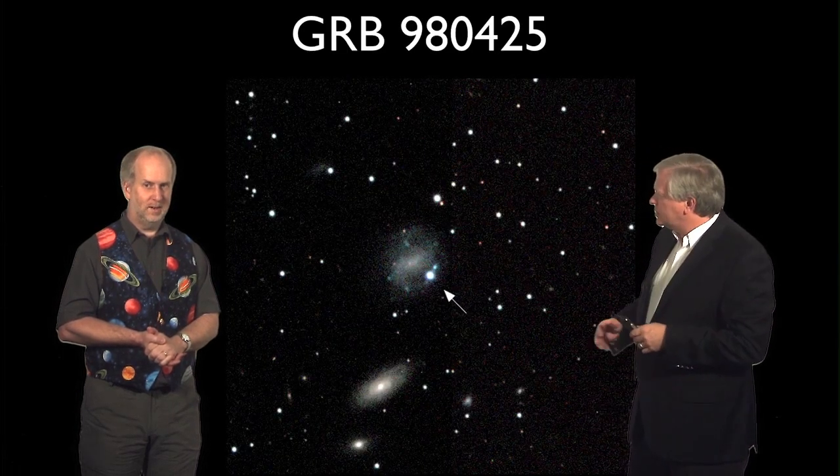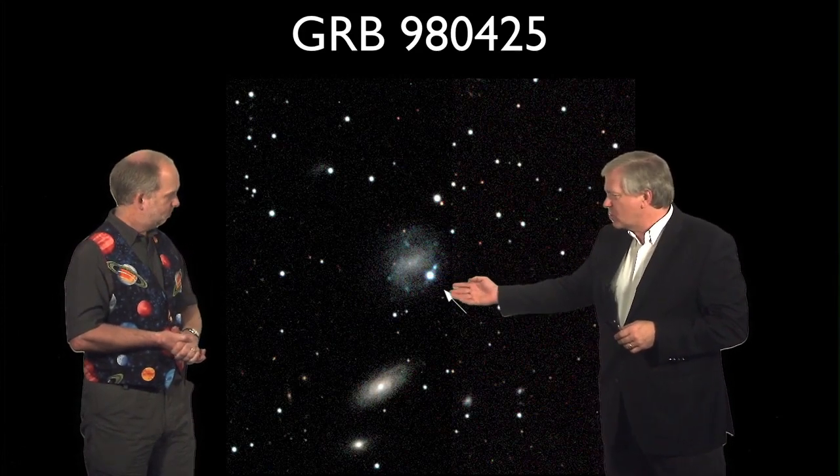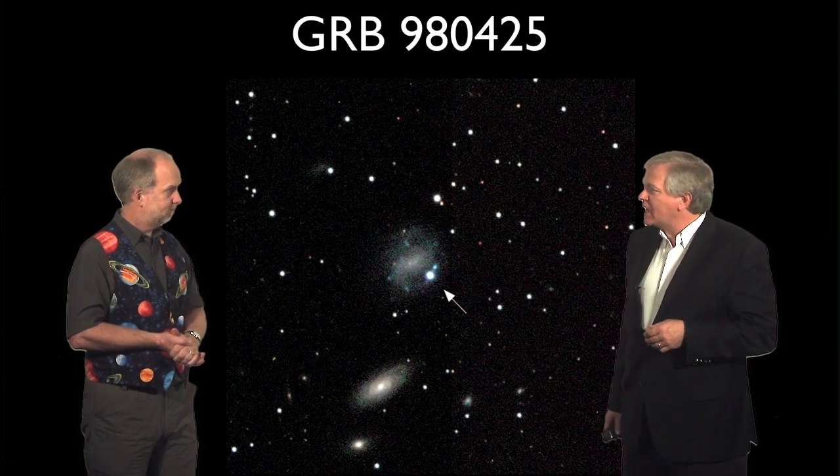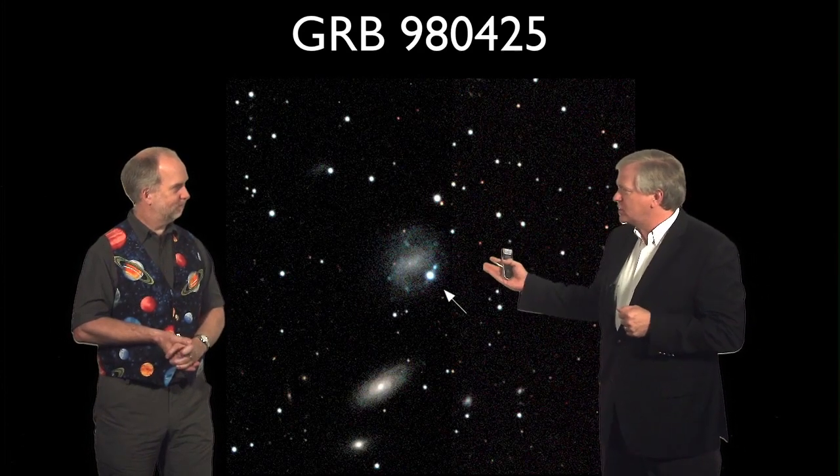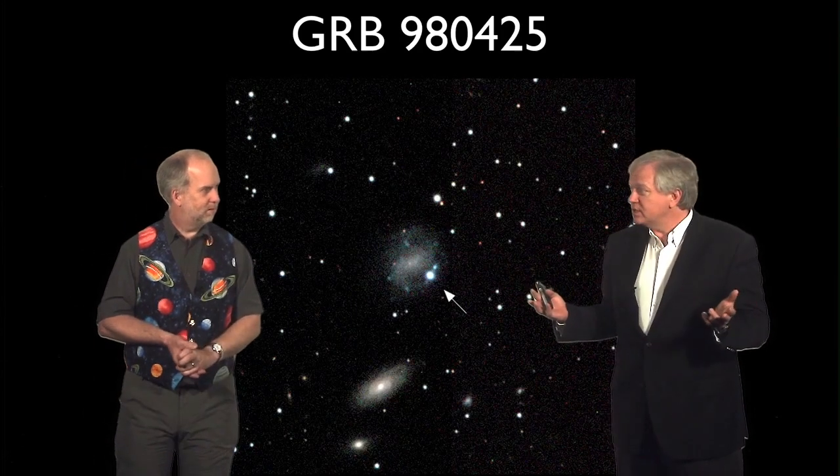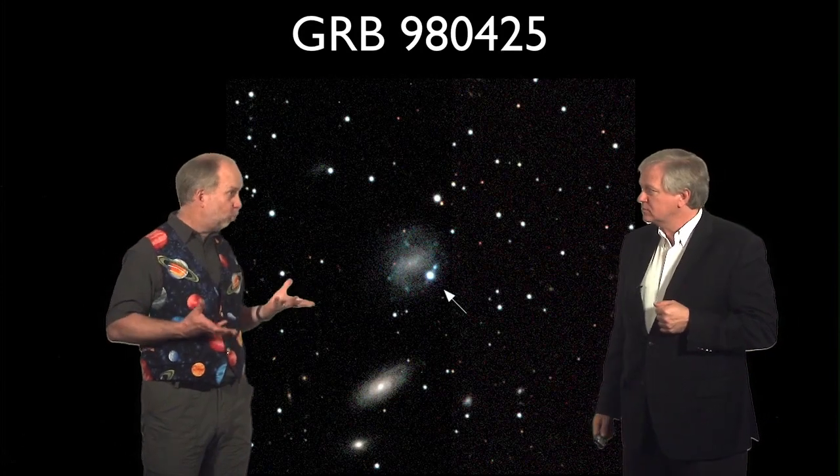I remember it was April 1998, and one of these Beppo-SAX gamma ray bursts went off. We were able to point our telescopes at the particular part of sky up at Mount Stromlo. It was the middle of the night, so we didn't really worry about looking at the data until the morning. That turned out to be a mistake because as the object came up and was observed around the rest of the world, it was immediately identified as an object that had appeared in a galaxy. But this galaxy is really nearby at a redshift well less than 0.01.